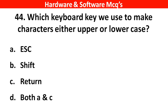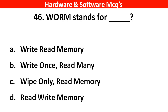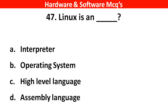Next question: Which keyboard key do we use to make characters either uppercase or lowercase? The right answer is option B — Shift. Next question: Which of the following is an input device? The right answer is option D — all of the above. Next question: WORM stands for ___. The right answer is option B — Write Once Read Many. Next question: Linux is a ___. The right answer is option B — operating system.